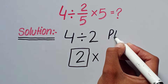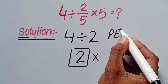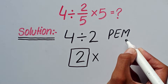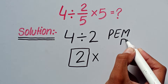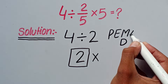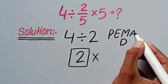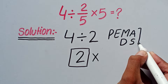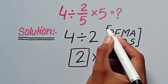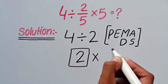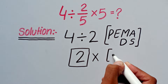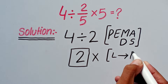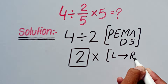According to PEMDAS rule, first we solve parentheses, then exponents, then multiplication and division, and after that addition and subtraction. According to PEMDAS rule, multiplication and division have equal priority and we solve them from left to right.